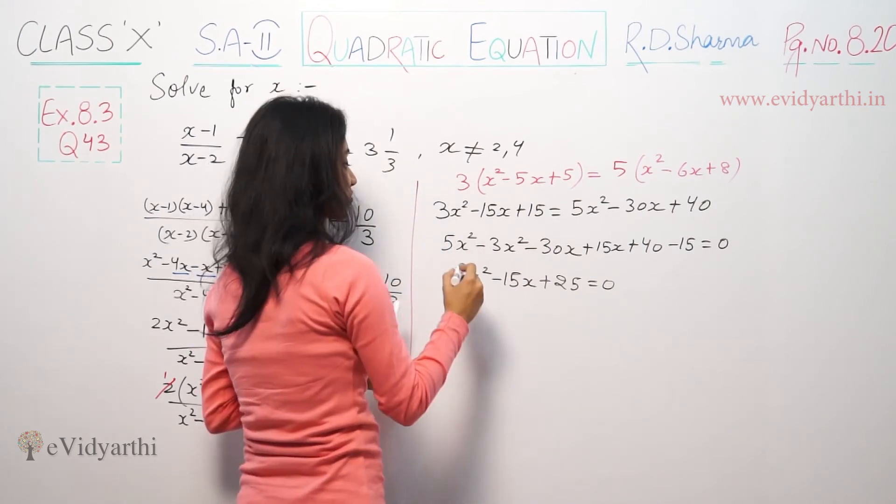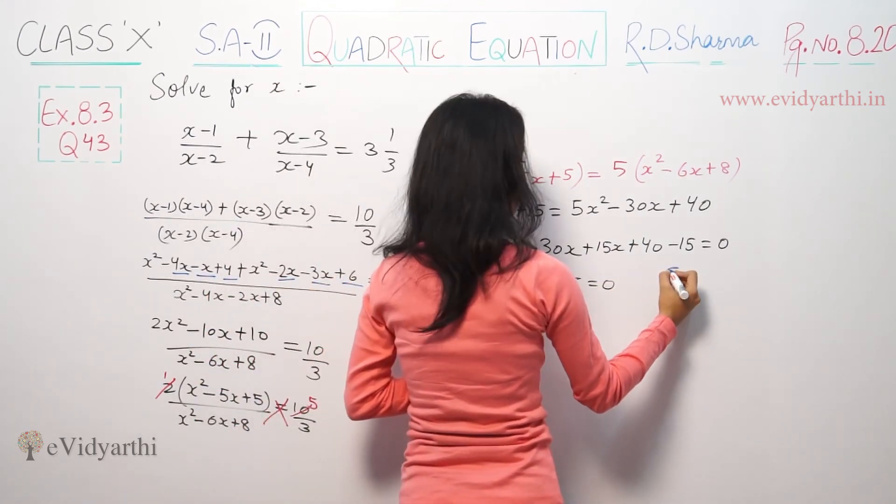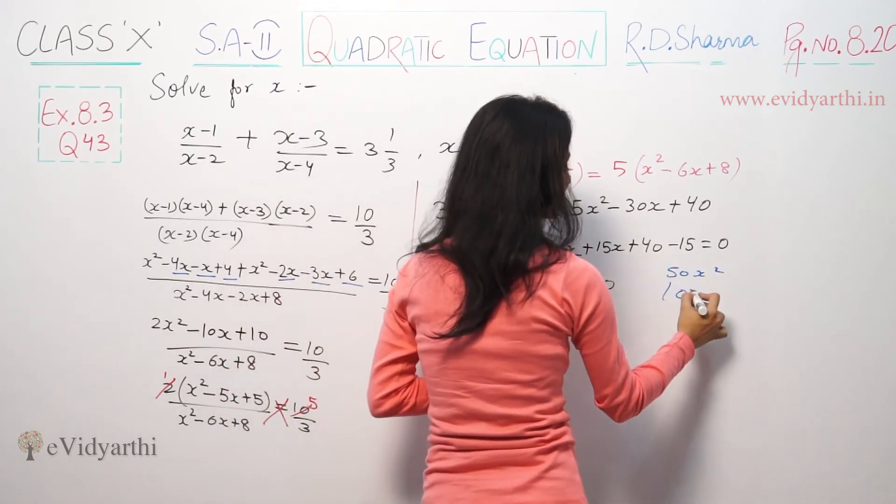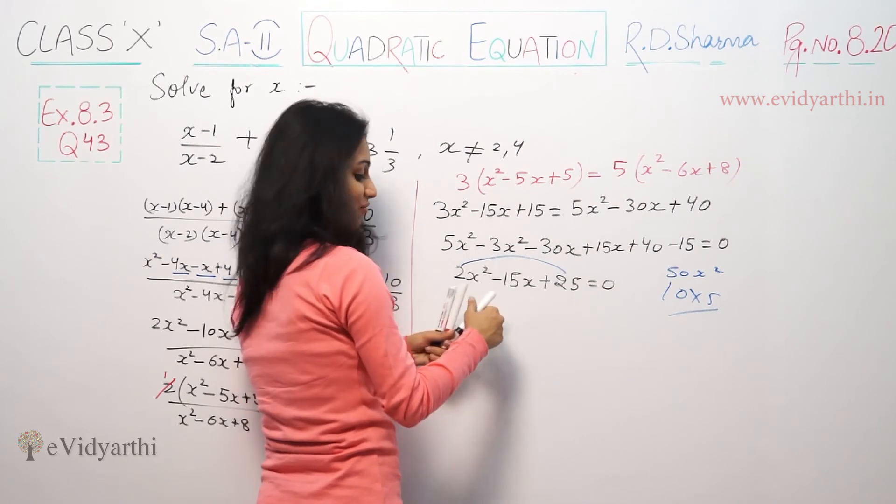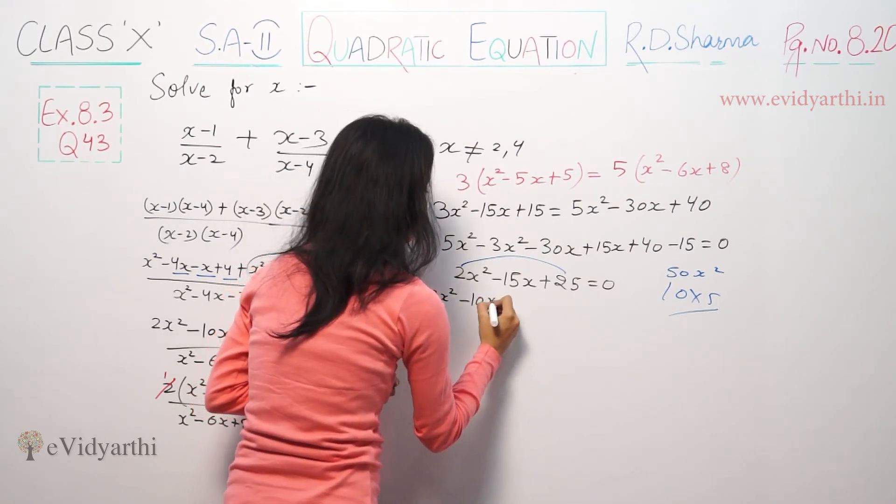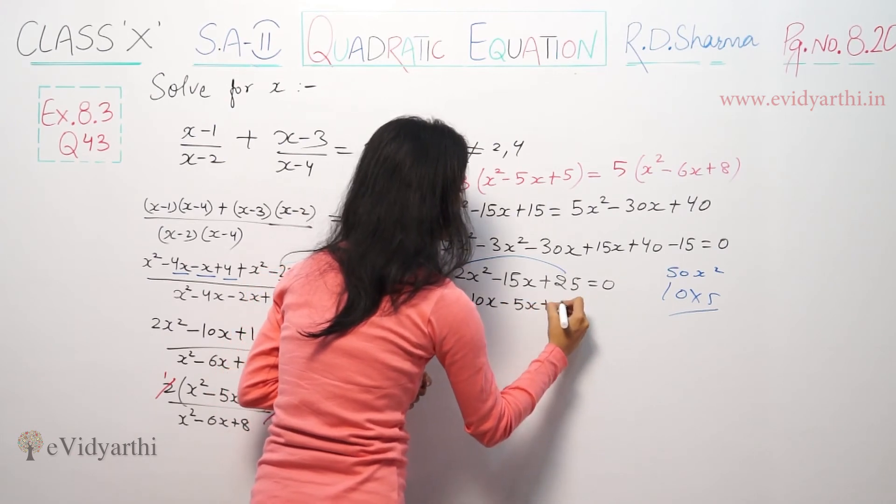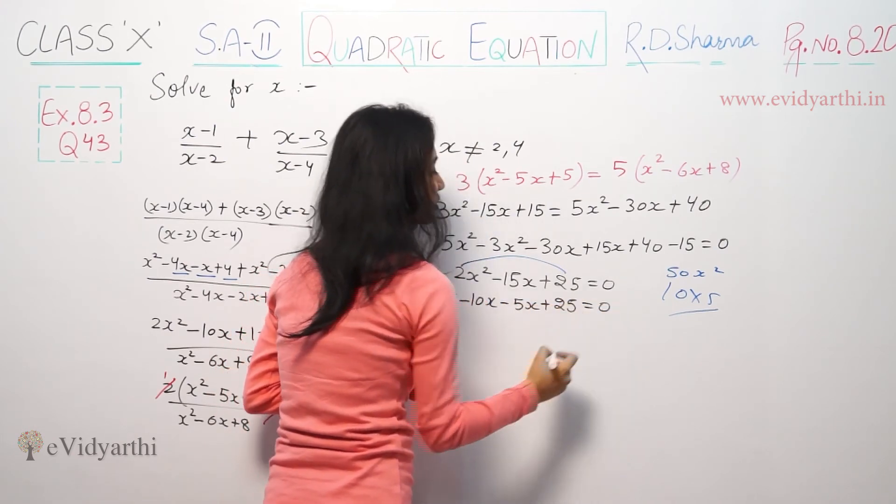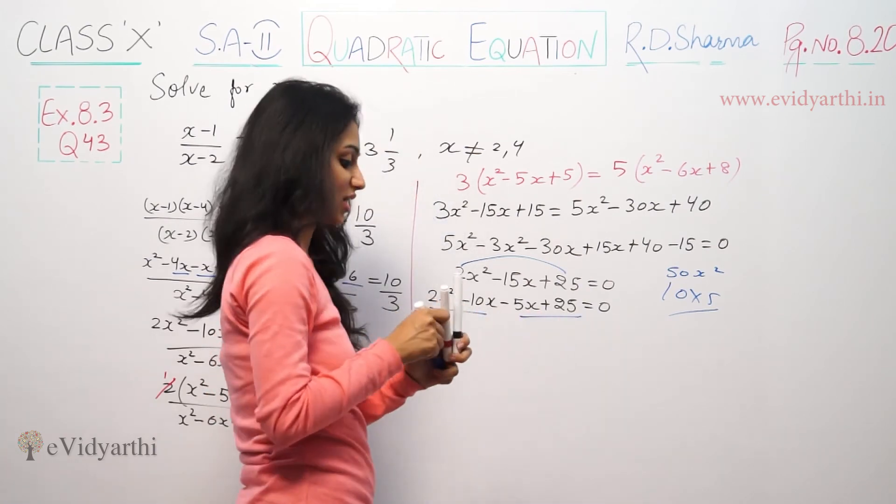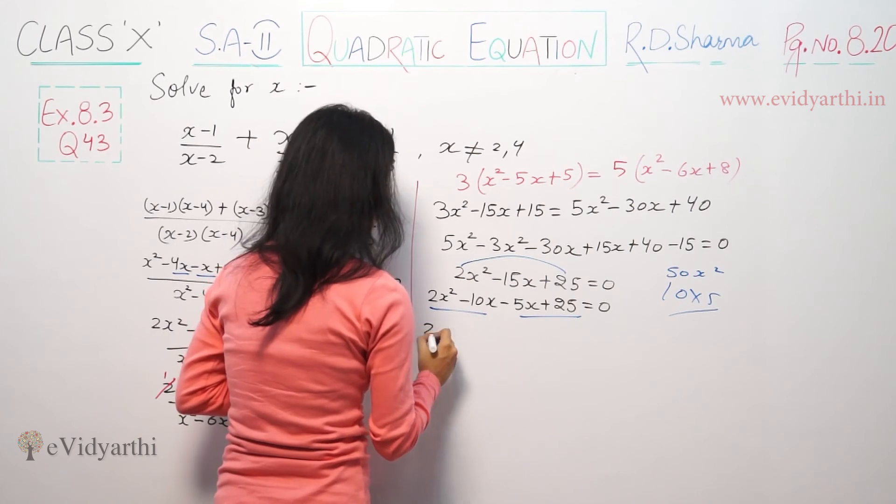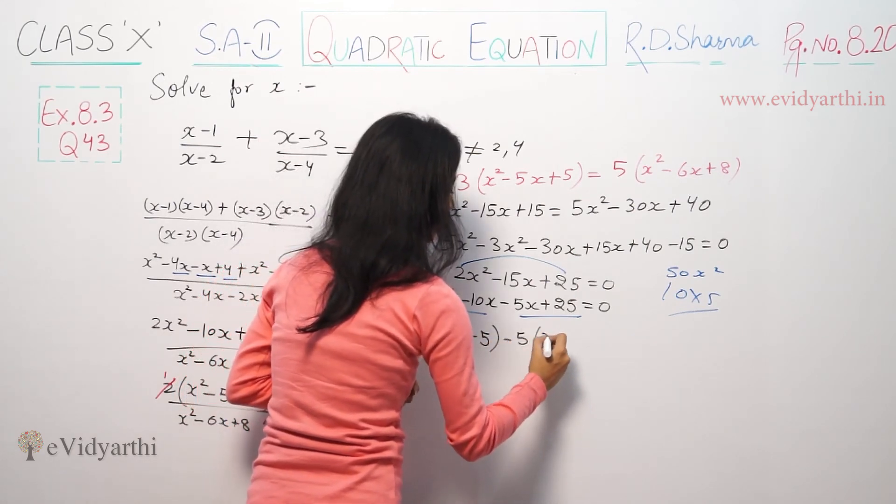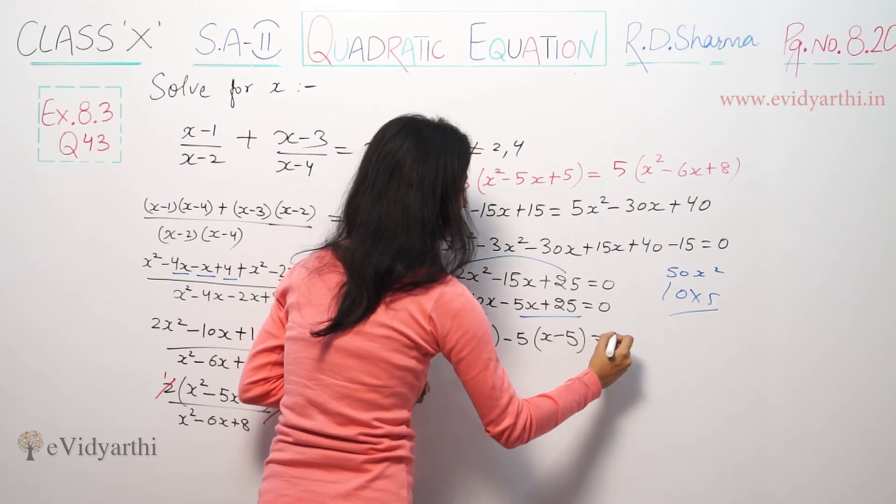Now multiply the two terms: 50x². Splitting 15: 10 times 5 is 50 and gives 15. So here: 2x² - 10x - 5x + 25 = 0. Now we take common from these two terms and these two terms. So here: 2x(x - 5) - 5(x - 5) = 0.